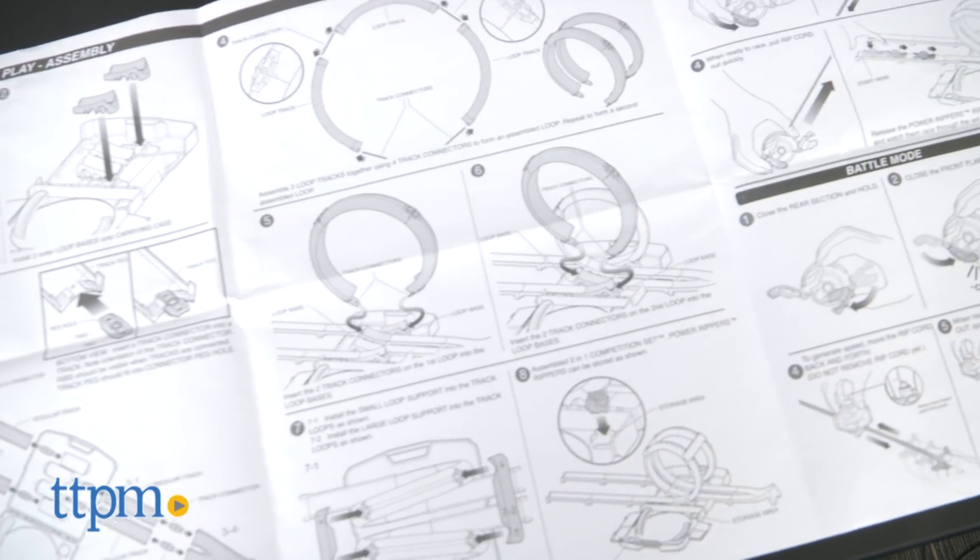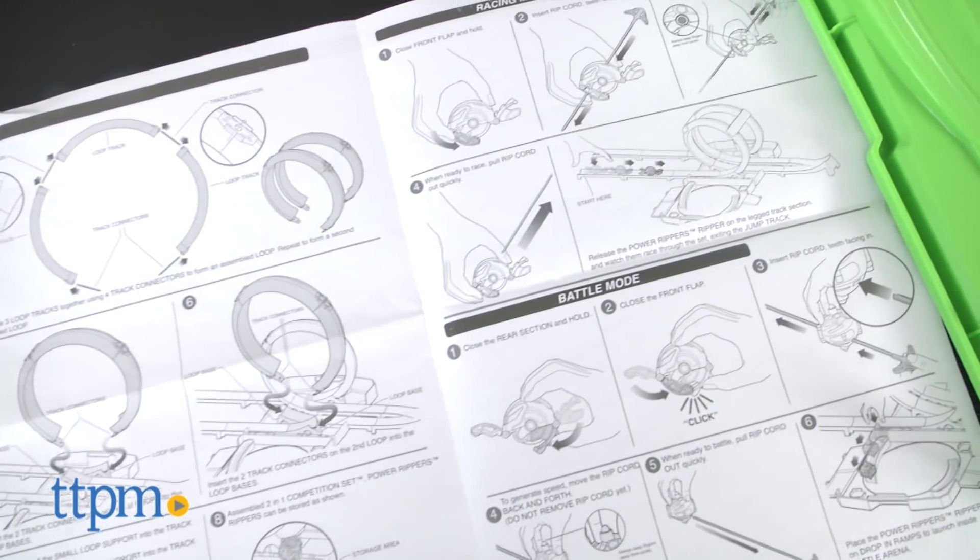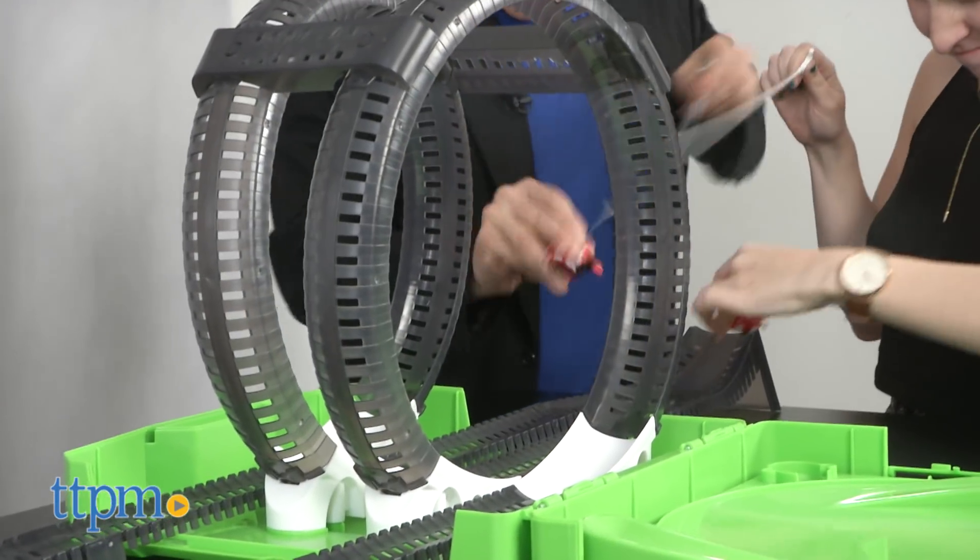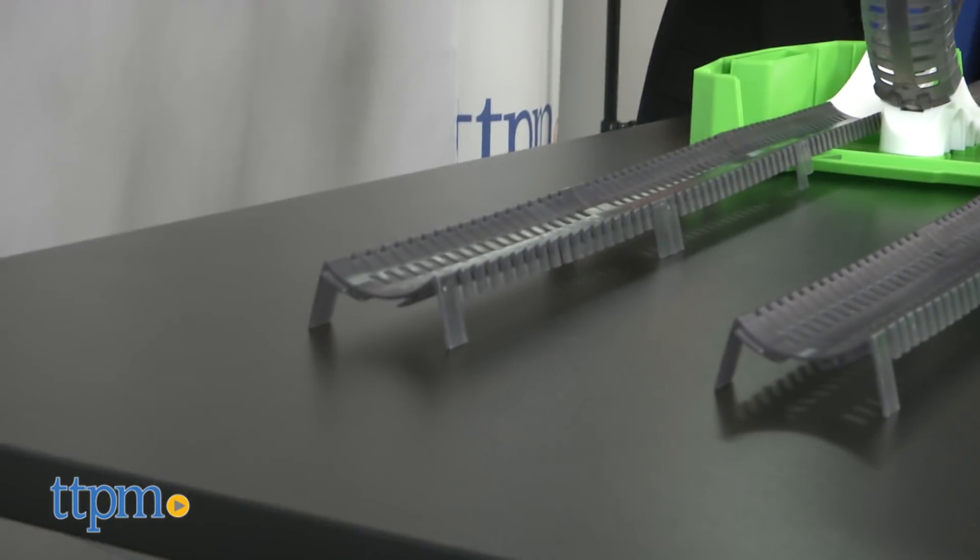For race mode, assemble the track with the loops following the instructions. Open up your Power Ripper, rev it up and let it fly. First one through the track wins.